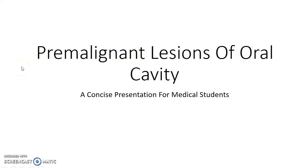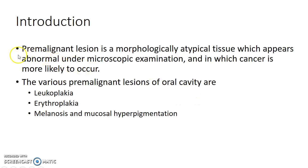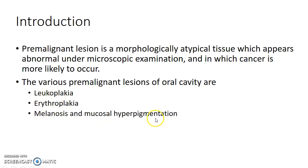Hello guys, this is Indian Medico and in this video we are going to see about premalignant lesions of the oral cavity. This is a concise presentation for medical students. A premalignant lesion is a morphologically atypical tissue which appears abnormal under microscopic examination and in which cancer is more likely to occur. The various premalignant lesions of the oral cavity are leukoplakia, erythroplakia, and melanosis or mucosal hyperpigmentation.